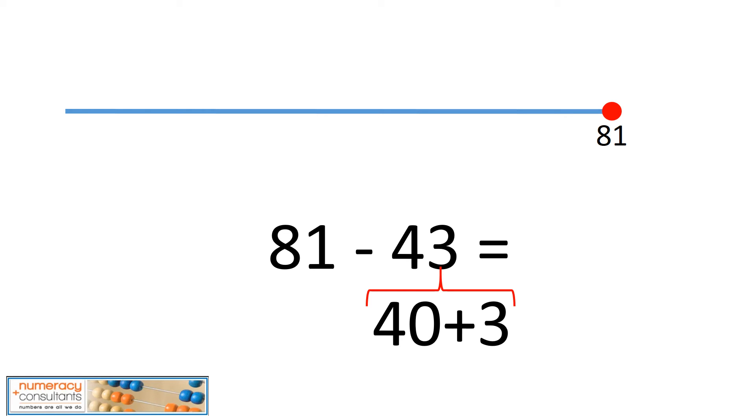Well, we know that there are four jumps of 10 in 40, and then there are three counts of one after that. So let's go ahead and do our counts of 10 first. So we're going to go 81, 71, 61, 51, 41. Now we have to go, 41, we have our three ones we need to count back. So 41, 40, 39, 38. So the answer is 38.